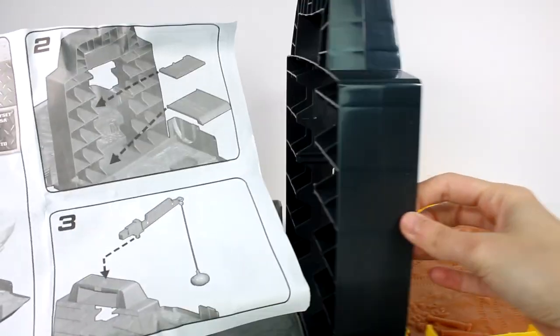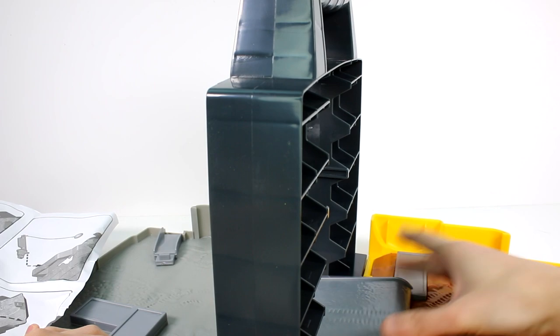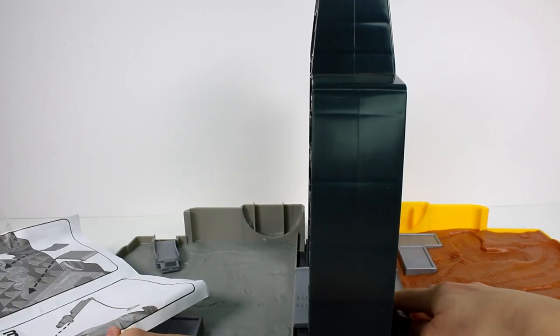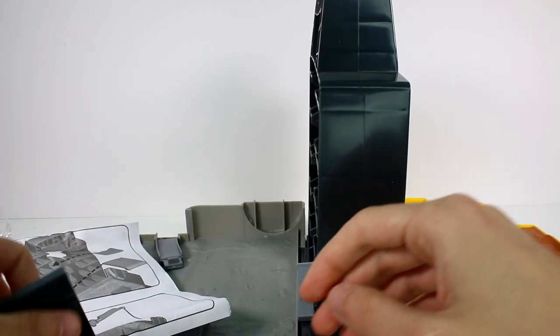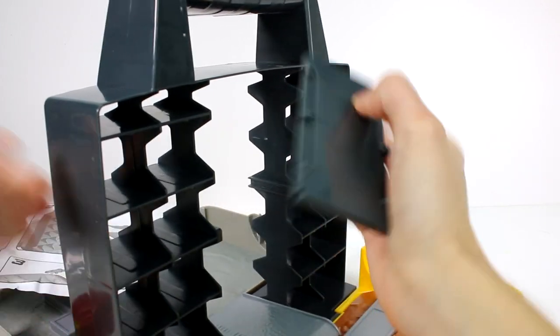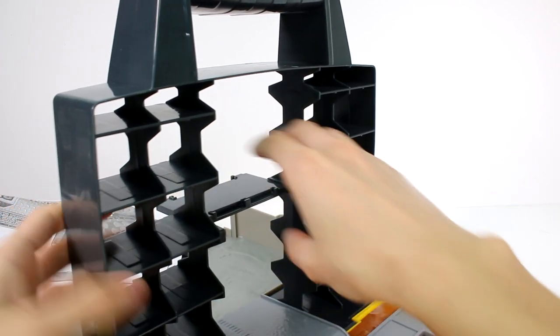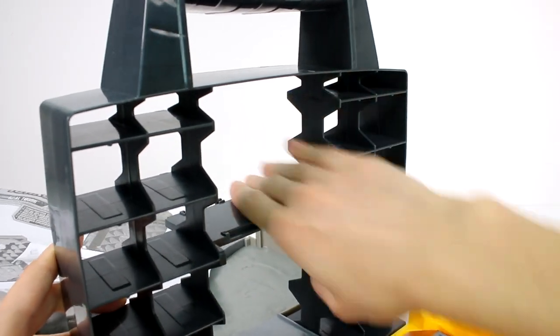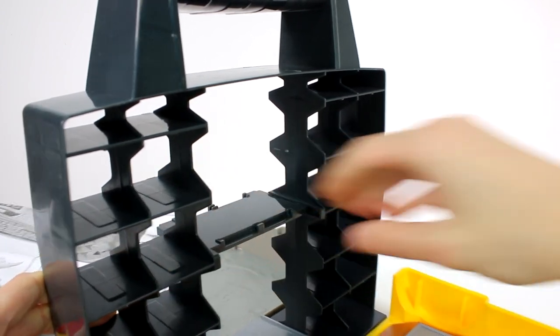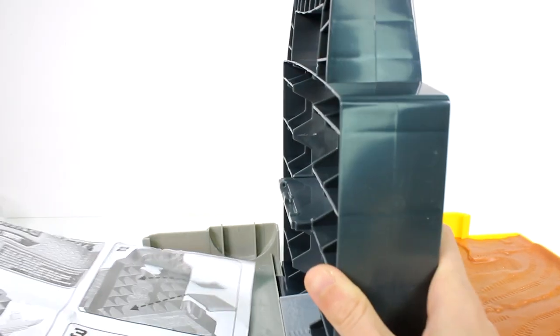So step number one we open it up. Step number two we have to put in our ramps I guess. I think we just kind of set them in there. Oh okay I see what we do. And this one right here. This is where we would put all of our vehicles. I love all of this space. How many cars does it fit? It says it stores up to 20 Tinys vehicles. That's awesome. I don't know why this is not going in all the way. I just am at a weird angle. So we'll just leave it there for now.